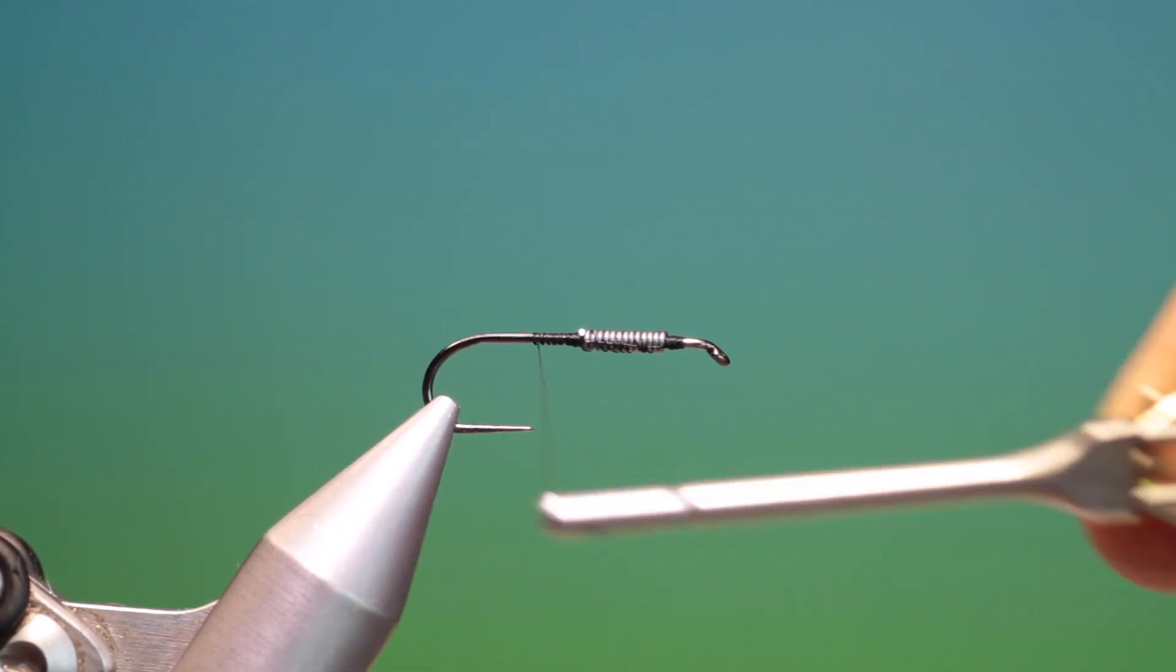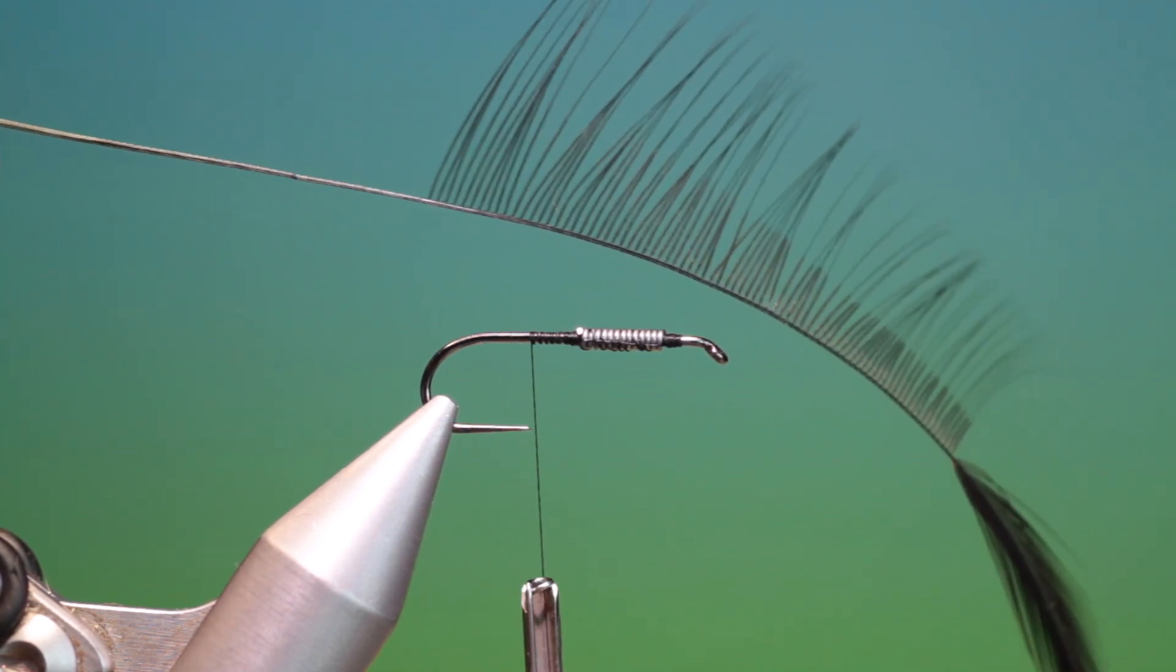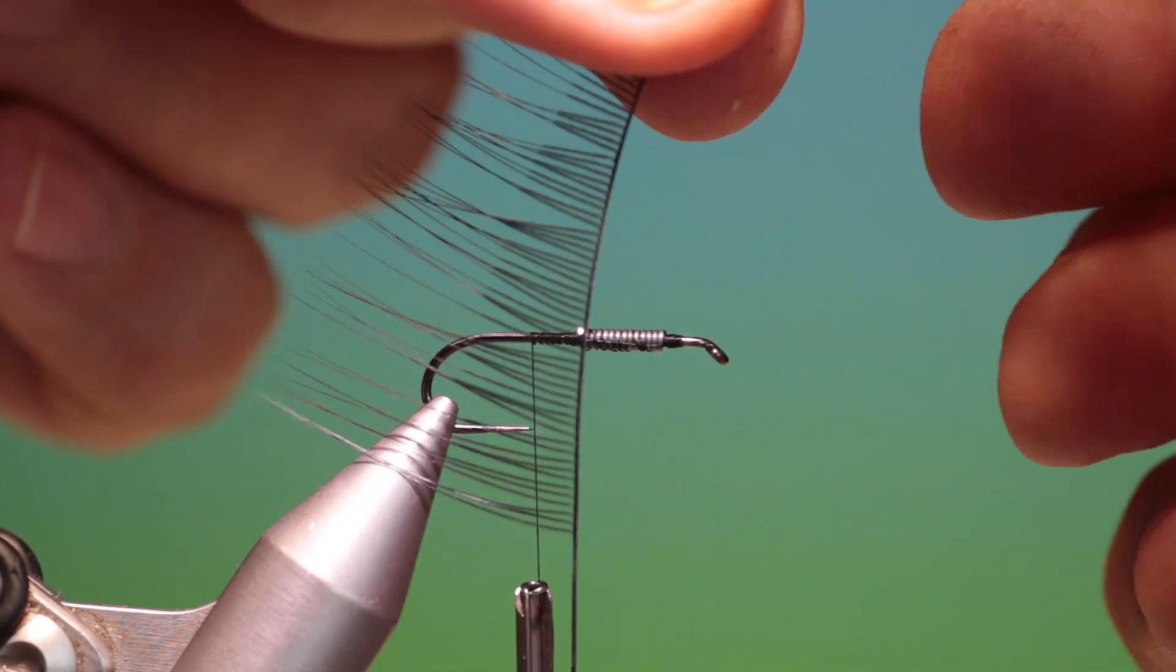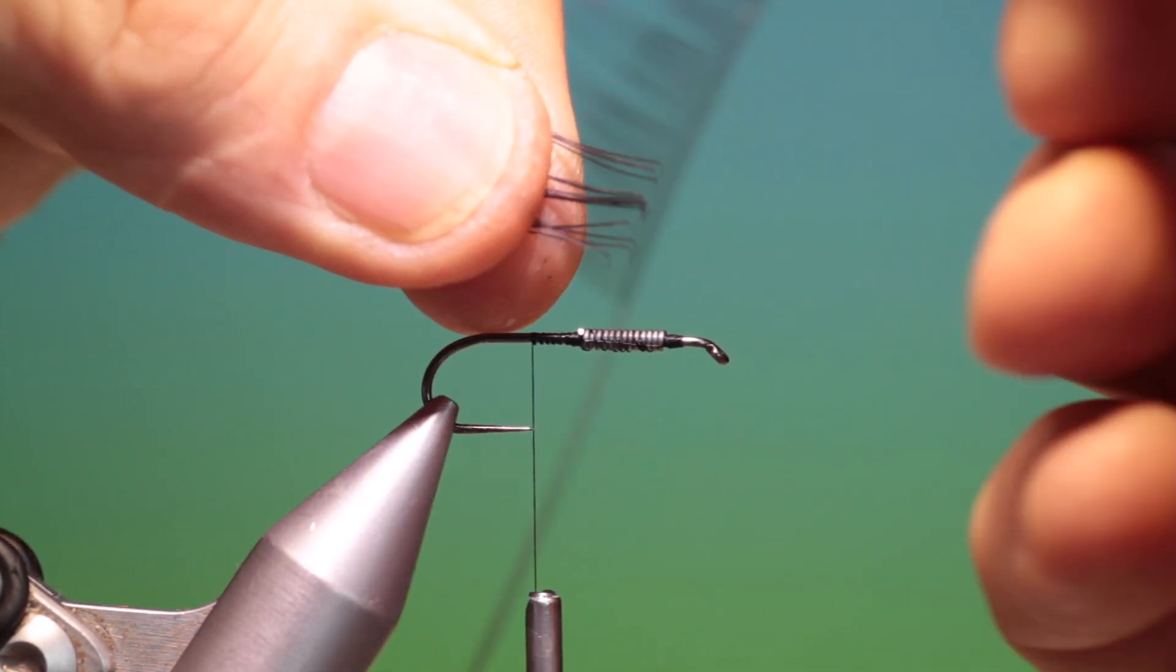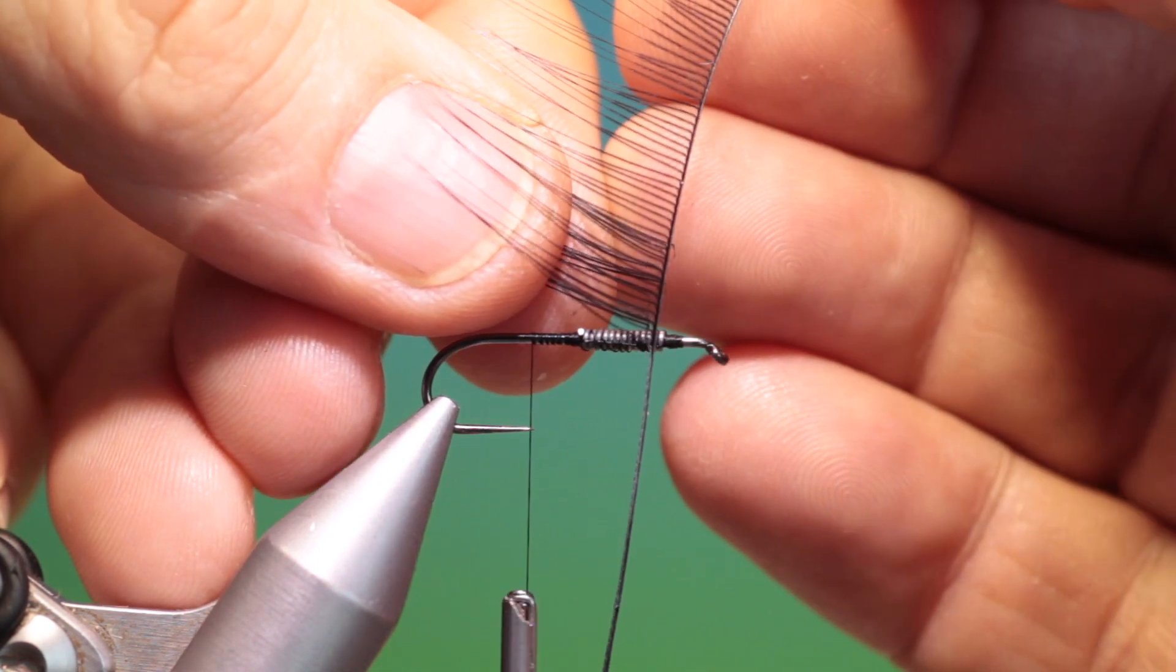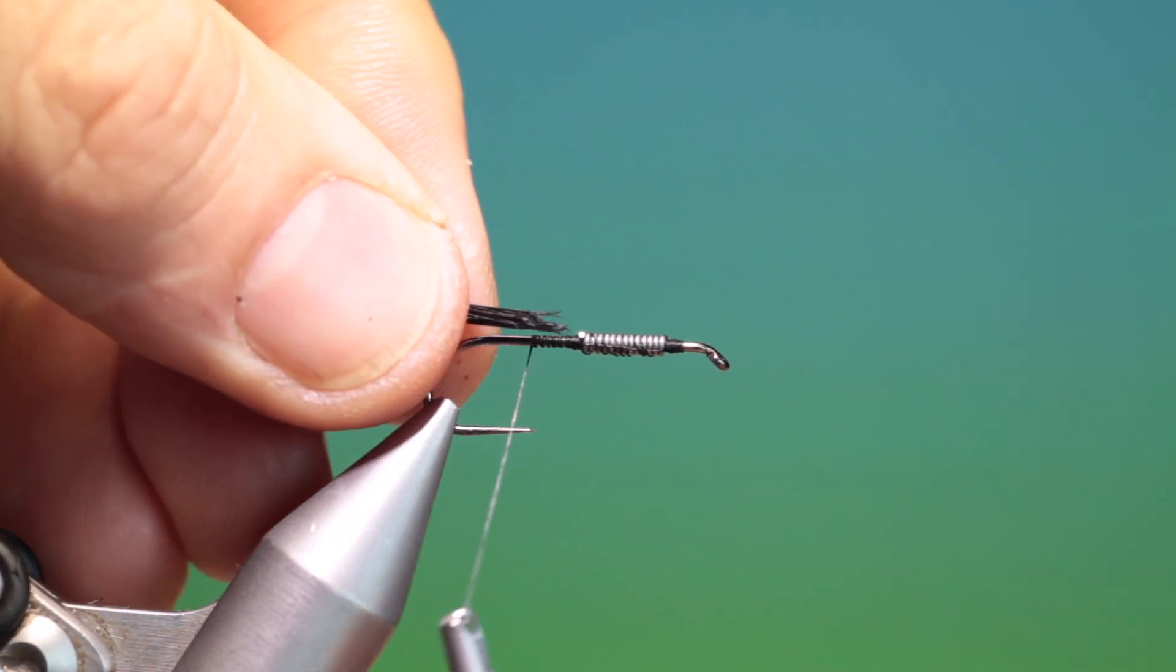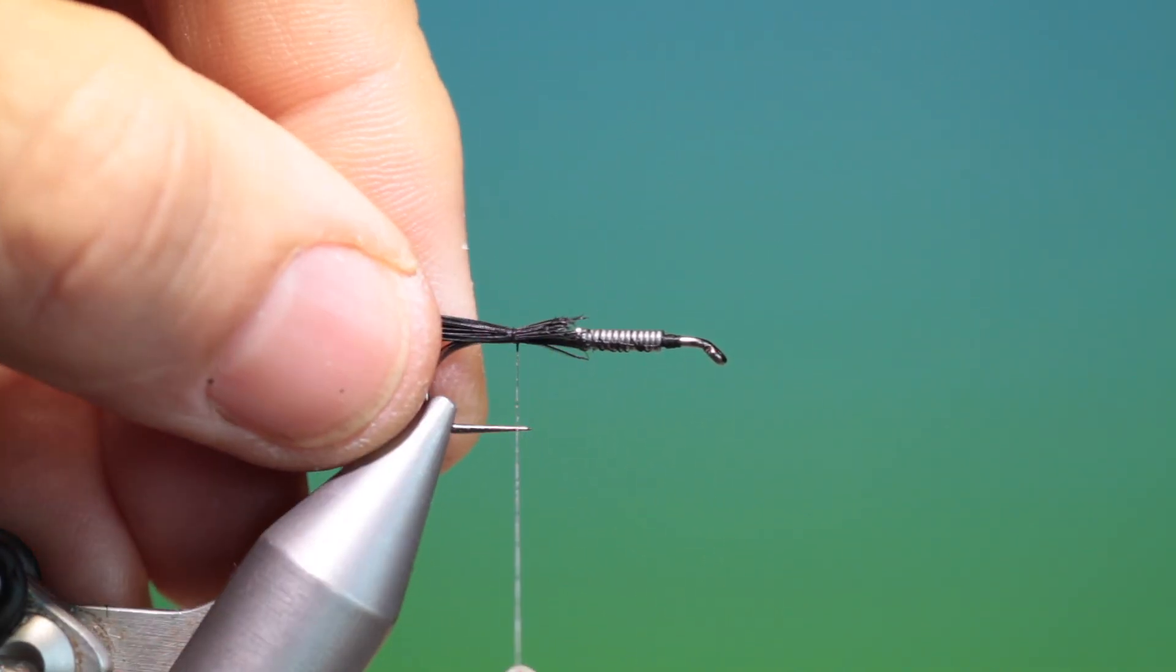And work our way back to about there. Then we need a black cock hackle for the tail. What we do here is we take pull the fibers out, stroke them out like this. I've removed the fibers from this side, makes it easier. Then we take hold of some of the fibers like that and we just pull them off. You just match them up in your hand until we have a bunch. Measure the tail. So I'll just tack that in with a couple of turns, just check the tail length. That will do me nicely.